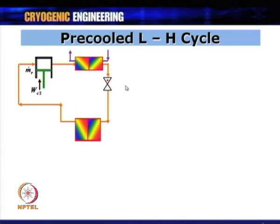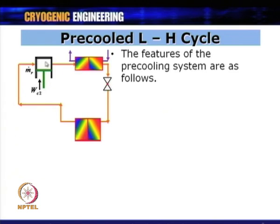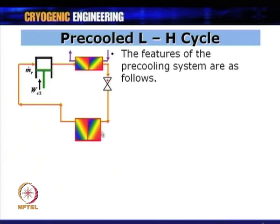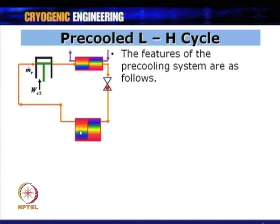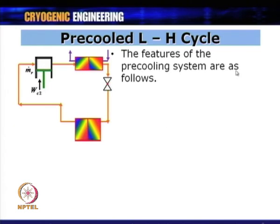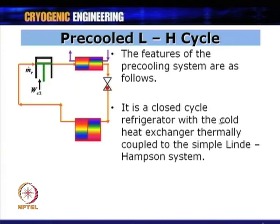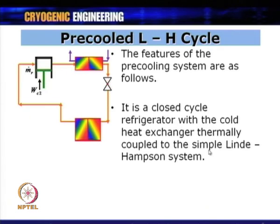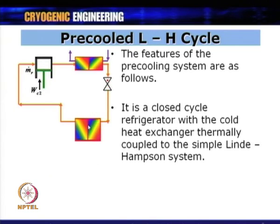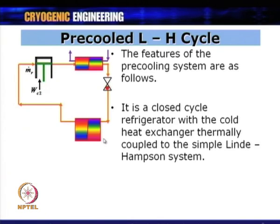The pre-cooling circuit comprises the refrigerant compressor, a condenser, a JT valve, and the pre-cooling heat exchanger. This pre-cooling heat exchanger thermally cools the gas in the Linde-Hampson cycle. It is a closed-cycle refrigerator with the cold heat exchanger thermally coupled to the simple Linde-Hampson system.